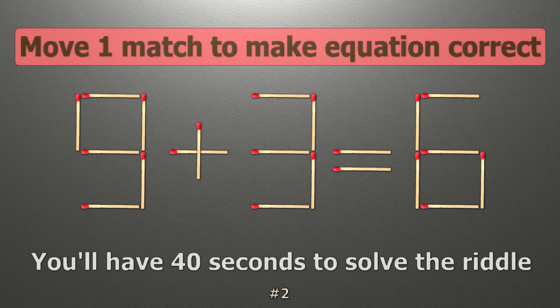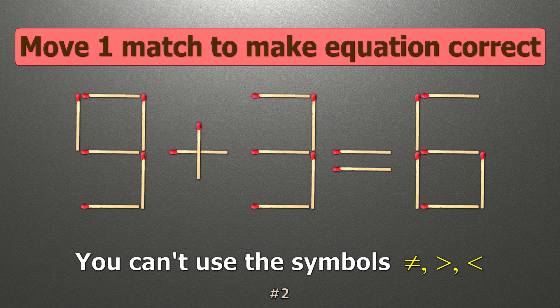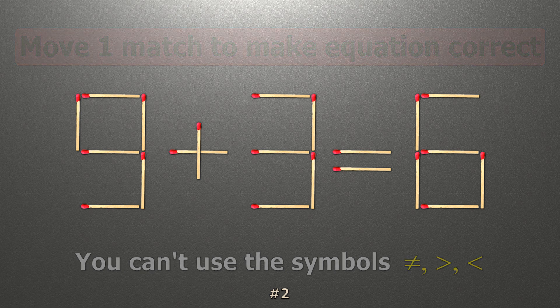We have the equality 9 plus 3 equals 6. Our equality is wrong. We need to move one match to make our equality correct.